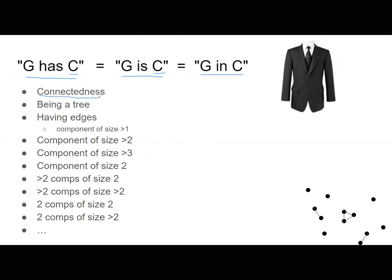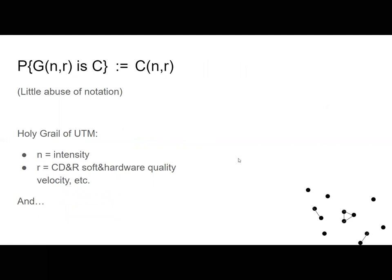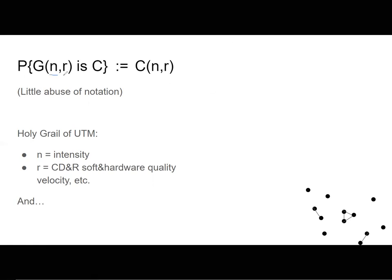We are now only interested in monotone properties. We can define the probability that a certain random geometric graph has a certain property. A random geometric graph is defined by two things: n, the number of nodes placed randomly on the plane, and r, the radius. The graph has a certain property with a certain probability, denoted C(n, r). For example, the probability that a random geometric graph is connected, or is a tree, is denoted like this for the corresponding property C.